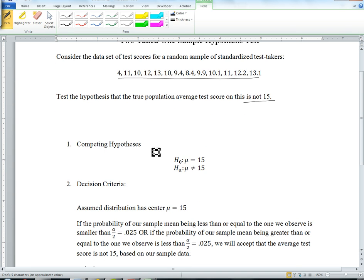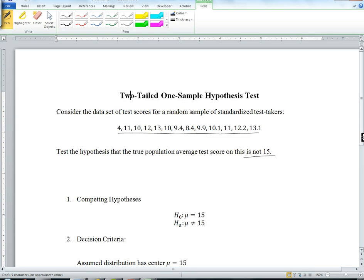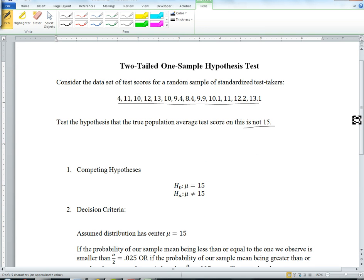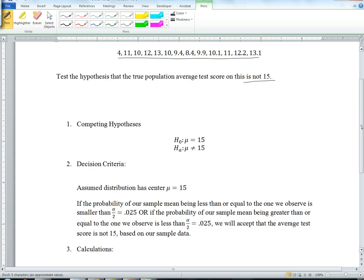Our competing hypotheses are H0: mu equals 15 versus H alternative: mu is not equal to 15. We don't have a direction on this. This is not a directional test. We just want to see if it's any different. So we will gladly reject the null hypothesis if it's greater than or if it's less than. We just want to see if it's changed.